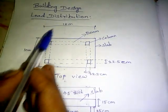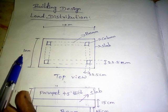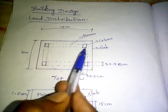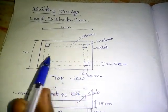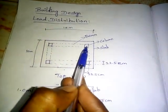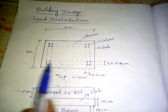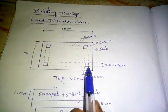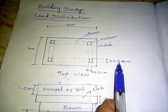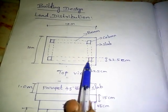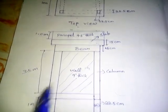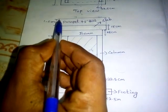This is a slab. If we know the size, the line is rough — roughly in the height. If you look at the base, the column and the beam — this box is a column and a beam. This beam is 22.5 cm, that is 3 inches. This column is 22.5 cm. This is the top view. This front view is a parapet wall.